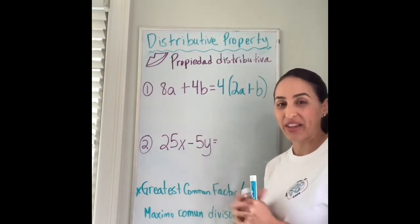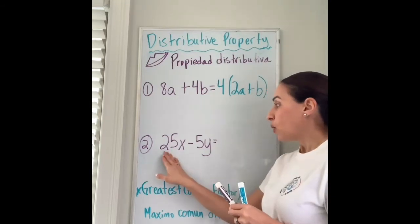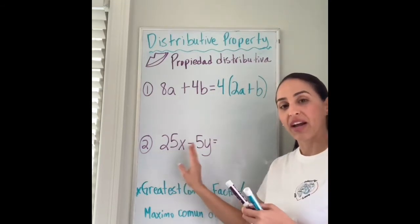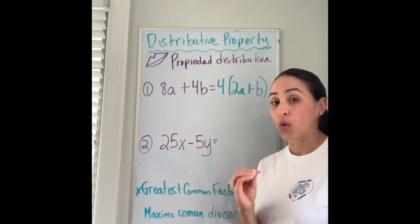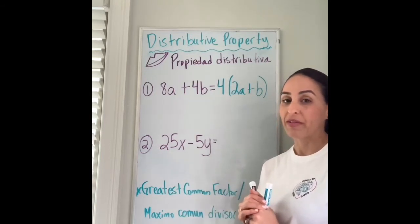Okay, let's go ahead and go for the next example. What number goes into 25 and goes into 5 and it is the greatest common factor? The greatest common factor would be 5.